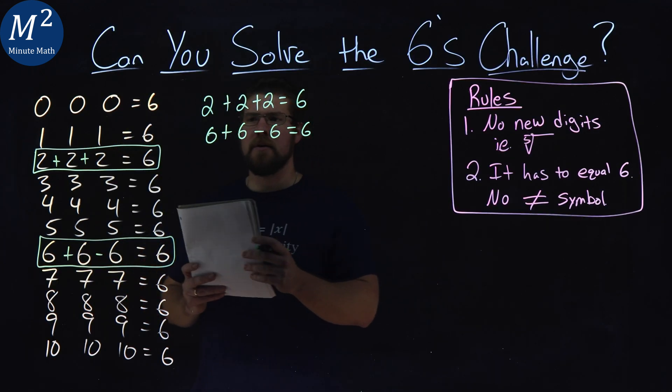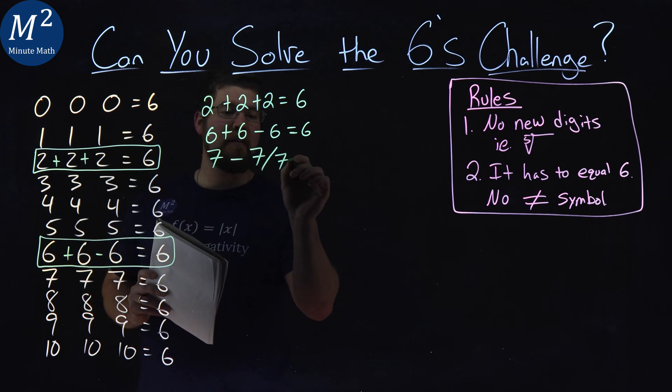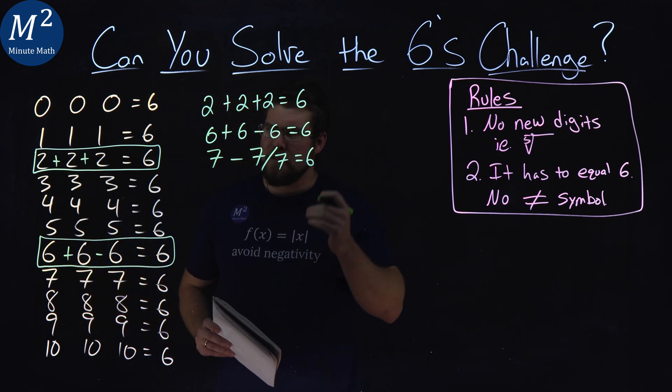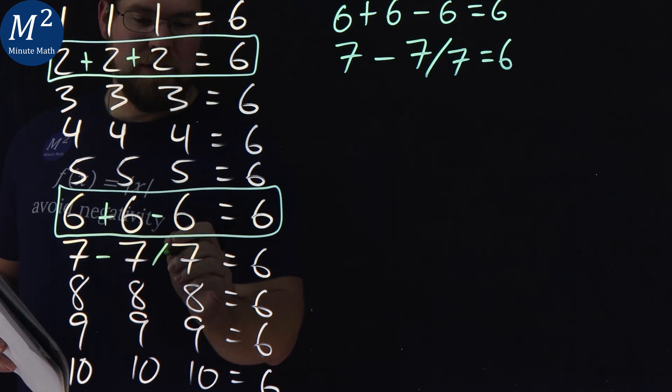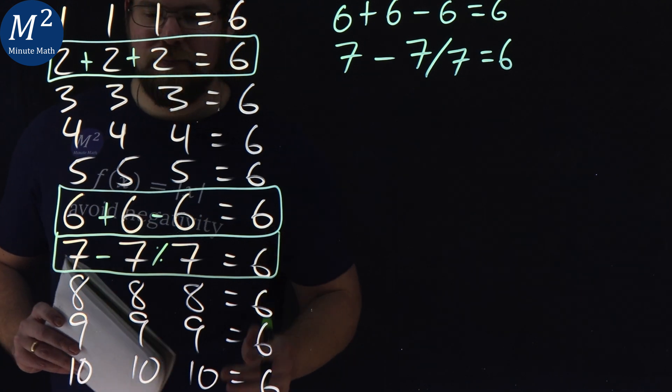Sevens is kind of similar. In a way, we would have seven minus the seven divided by seven equals six. Seven divided by seven is one. Seven minus one is six. So put that here. We have minus and divided by symbol.